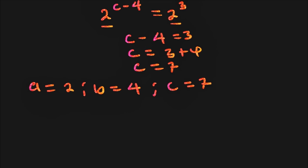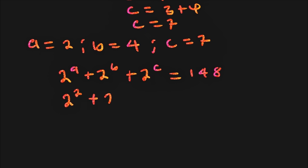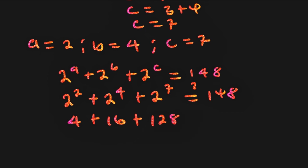We can check these solutions in the original equation 2 power a plus 2 power b plus 2 power c equals 148. Substituting: 2 power 2 plus 2 power 4 plus 2 power 7. That is 4 plus 16 plus 128. And 4 plus 16 is 20, and 20 plus 128 is 148. So we also have 148 on the left hand side, confirming that our solutions are true.